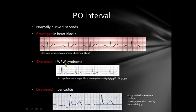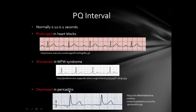The PQ interval is shortened in conditions such as Wolff-Parkinson-White syndrome — you can see right after the P wave comes the Q with barely any distance between them, so this is a shortened PQ interval, less than three small squares. It is depressed in pericarditis — the most typical example — and depressed PQ interval is very specific for pericarditis. You can see here the PQ interval is depressed.